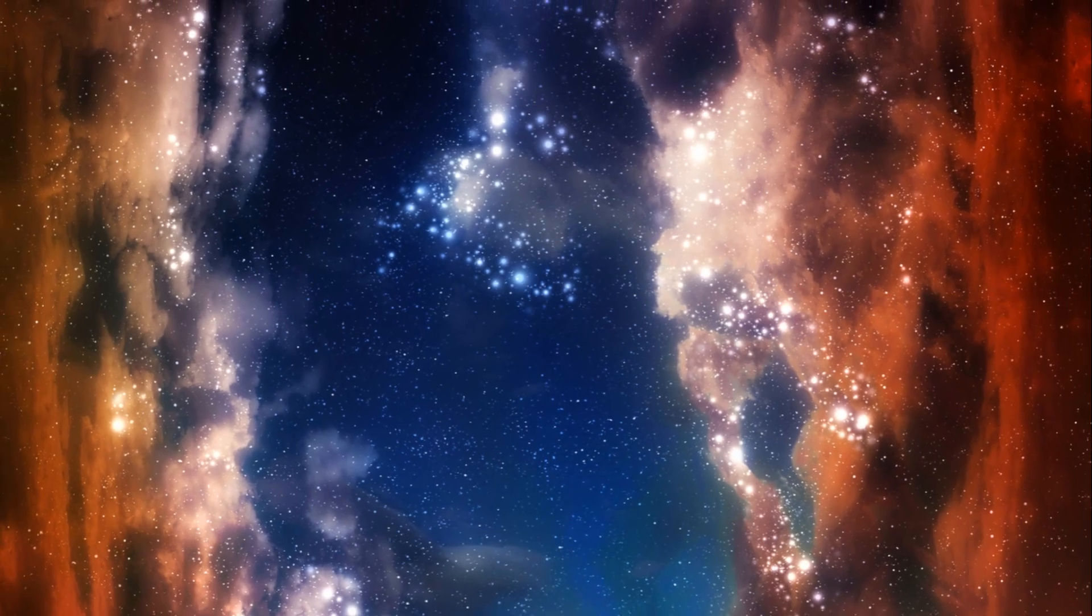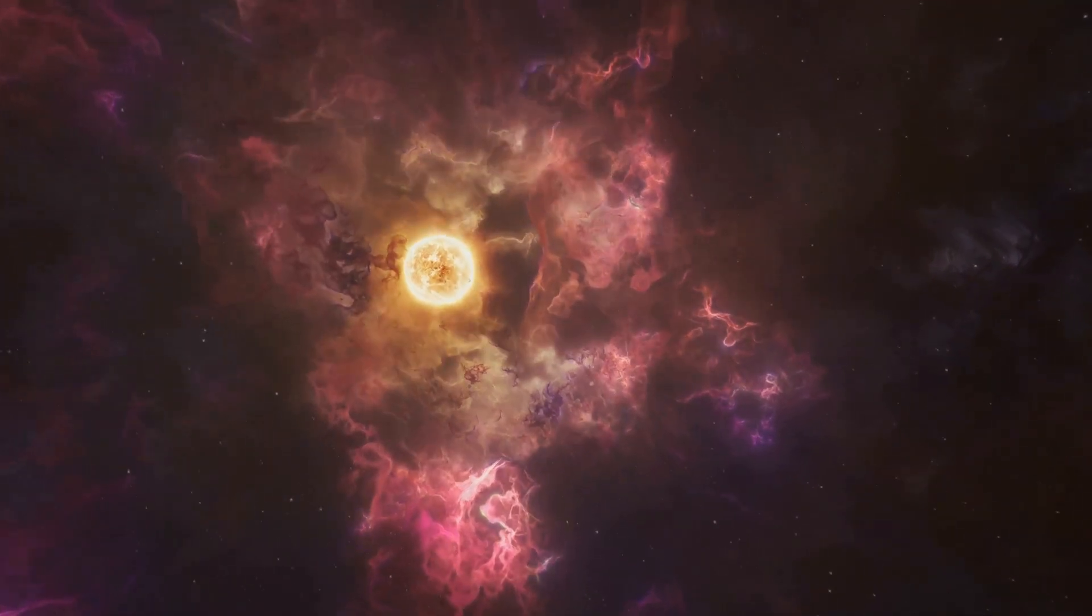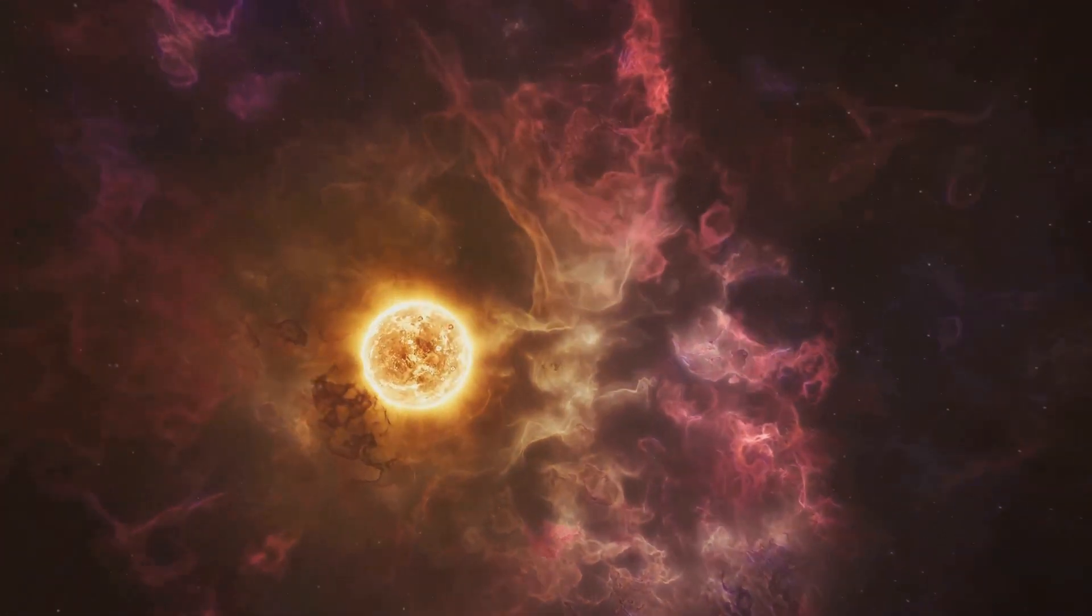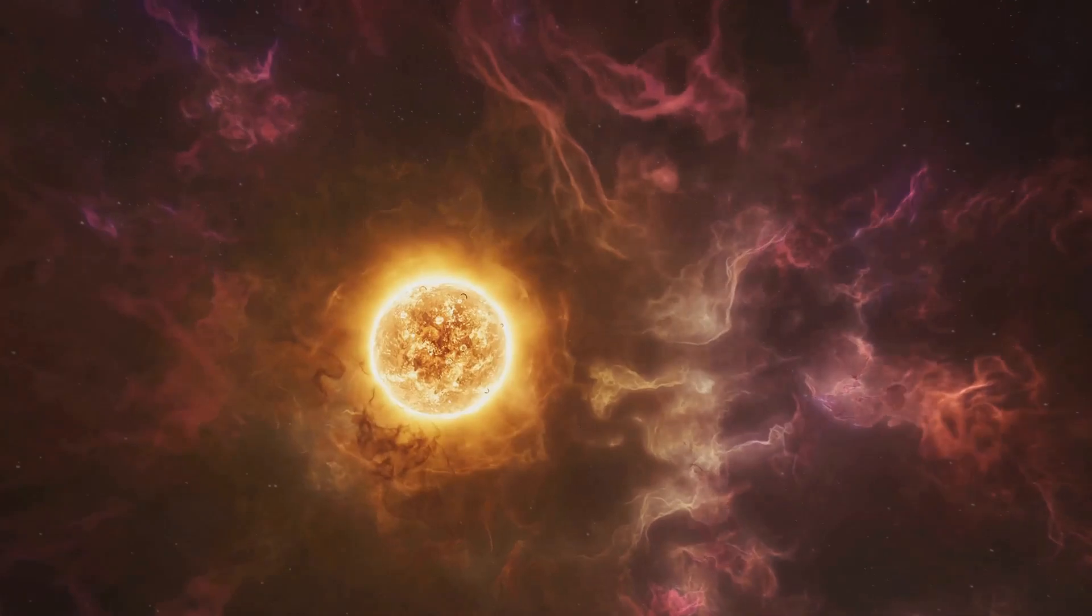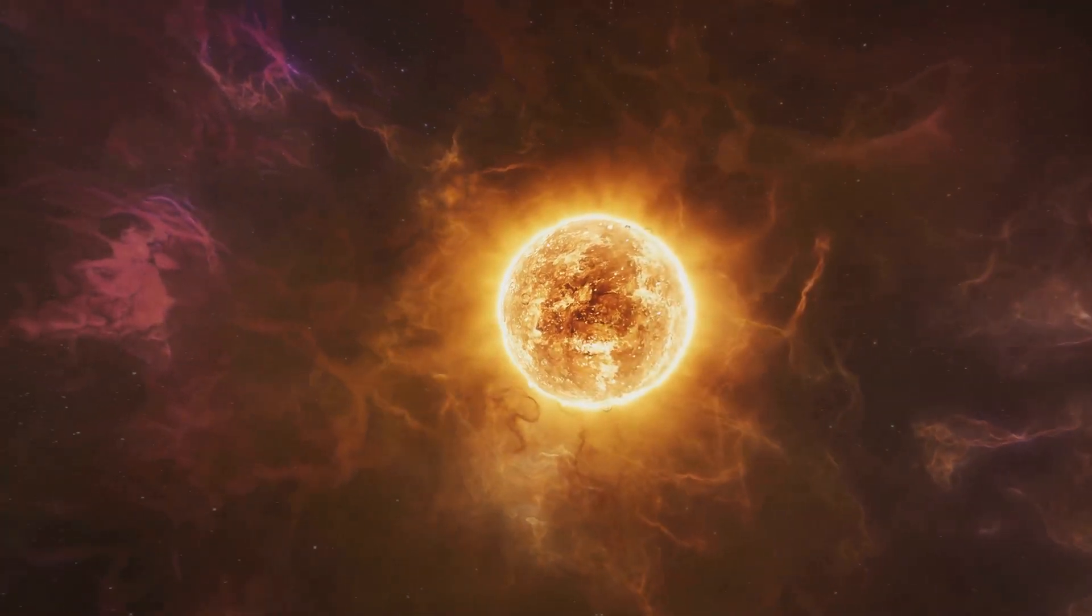Now, you might be wondering how these systems form. The process is a marvel of cosmic happenstance. When a cloud of gas and dust collapses under its own gravity, sometimes it splits into two or more cores. These cores eventually grow into stars, and voila, you have a binary or even a multiple star system.